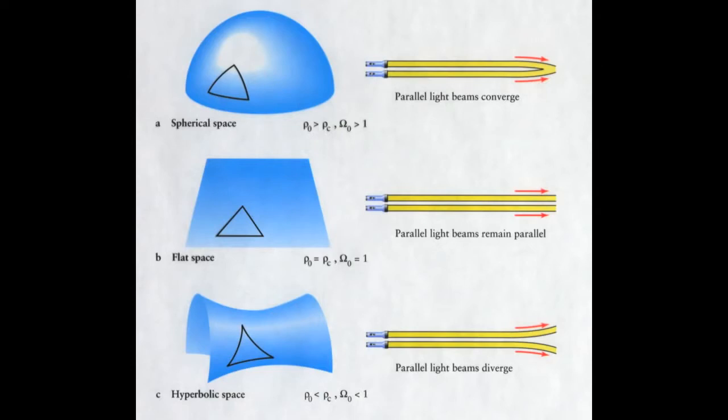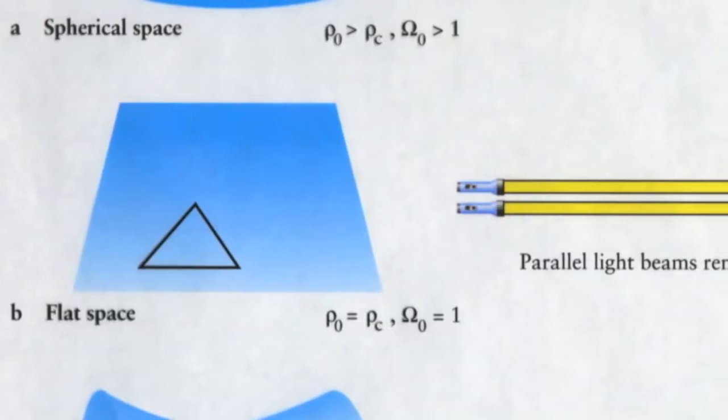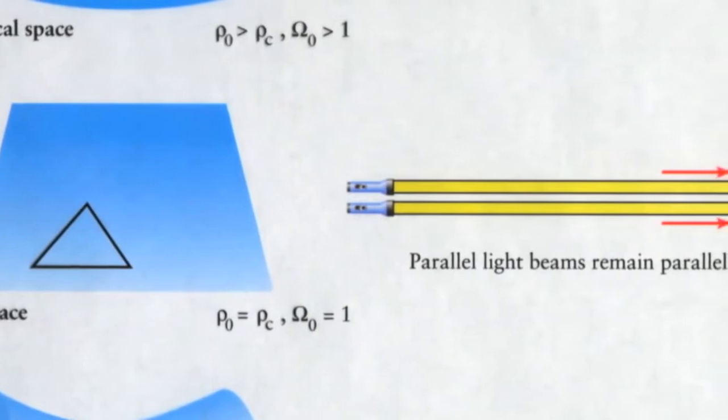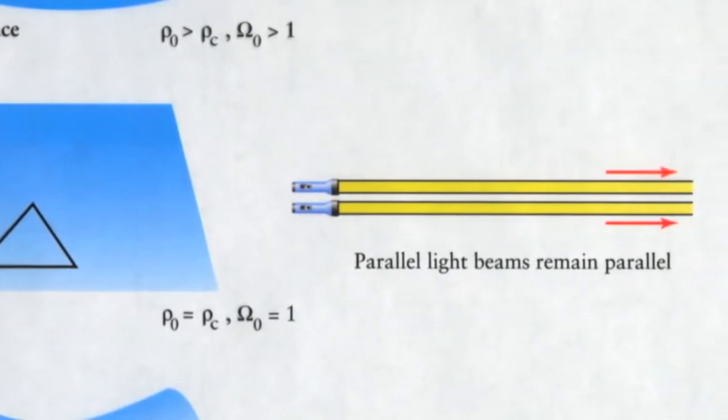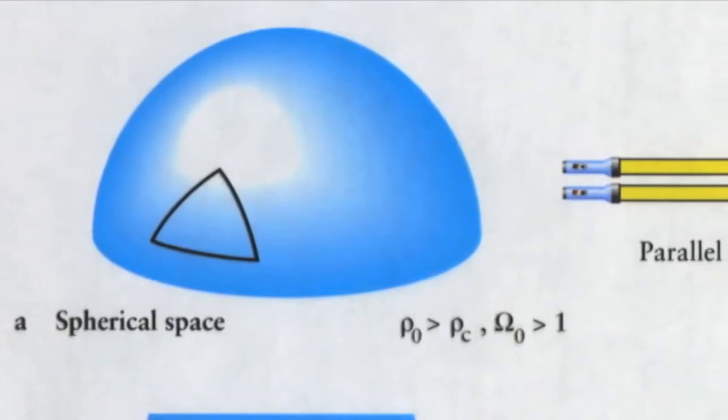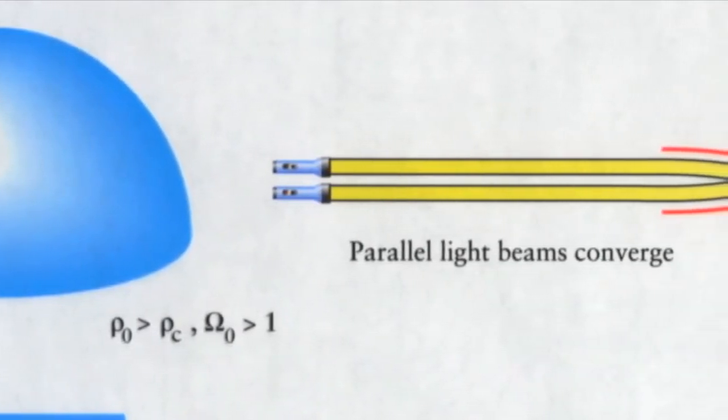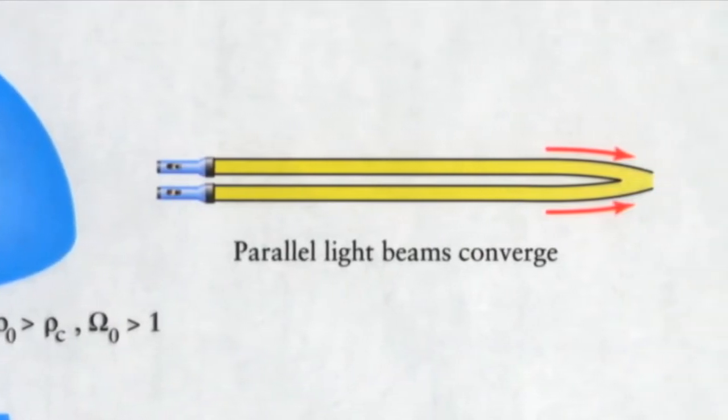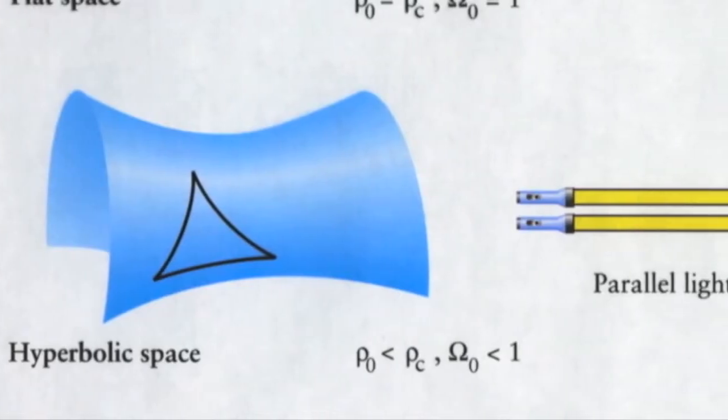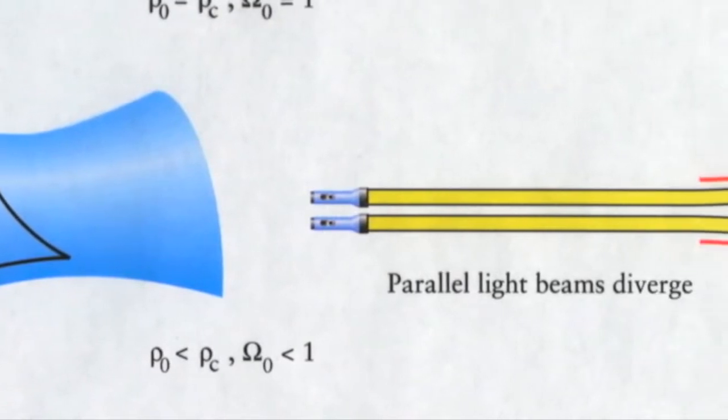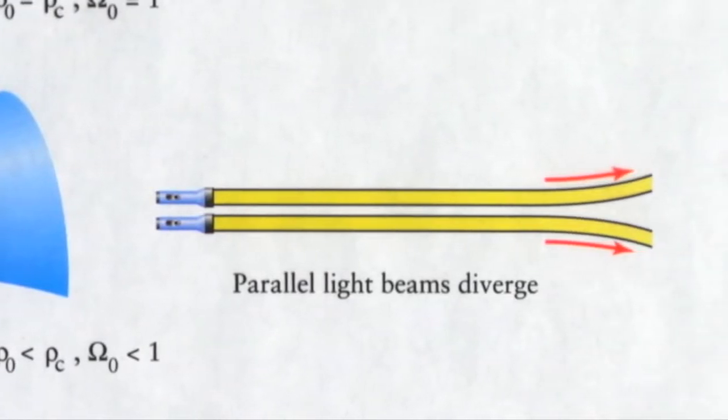To understand this relationship, all we need is basic geometry of triangles. On a flat surface, all angles in a triangle add up to 180 degrees, and parallel lines remain parallel. On a positively curved surface, like a sphere, they add up to something greater than 180, and parallel lines converge. A surface with a negative curvature, such as a saddle, the three angles add up to less than 180 degrees, and parallel lines diverge.